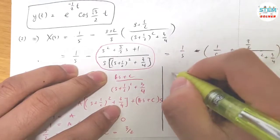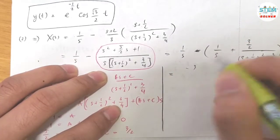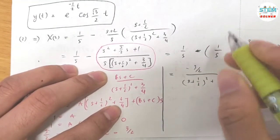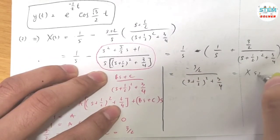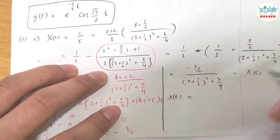Find this, distribute the negative sign. I'm left with 1/S minus 1/S, this is gone. And I have negative 3/2 over ((S plus 1/2)² plus 3/4) equals X(s). Now apply the inverse on both sides. I have X(t) equals.